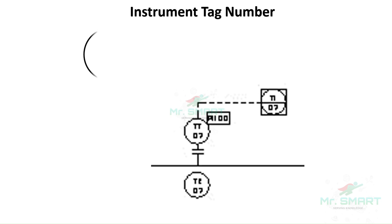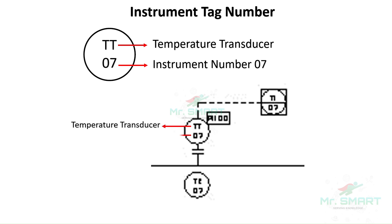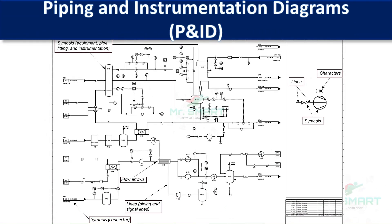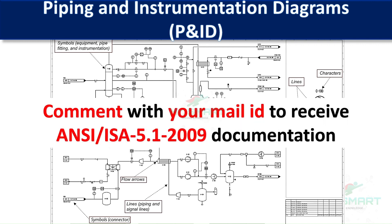Instrumentation tag is an alphabetical code abbreviating the instrument and its functionality. An instrumentation number is the unique numerical code given to each instrument. For example, the instrumentation tag TT-07 represents the temperature transducer numbered 07. P&IDs are essential tools for engineers, providing detailed information about the process flow and instrumentation in a system. By understanding the major elements we discussed, you can effectively read and interpret P&IDs. Don't forget to refer to ANSI 5.1-2009 and ISO 14617 for standardized symbols and notations. With practice, reading P&IDs will become second nature.